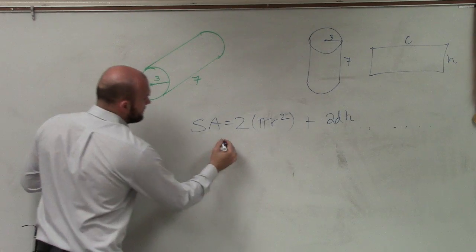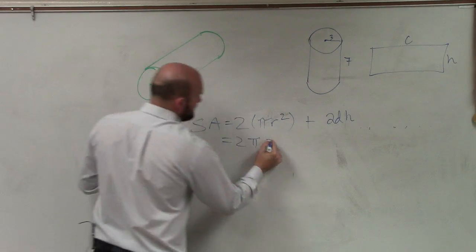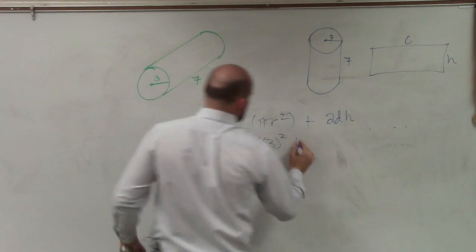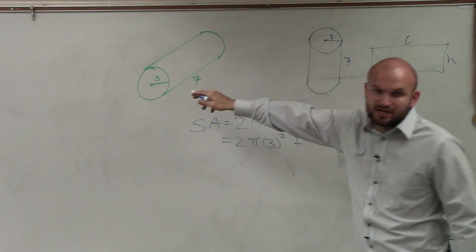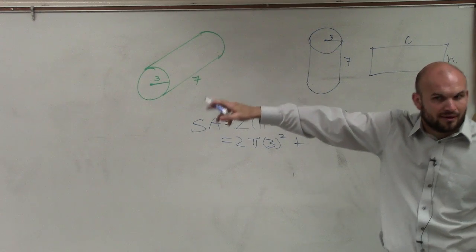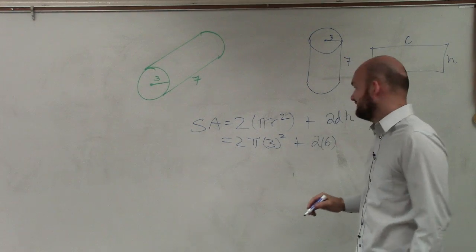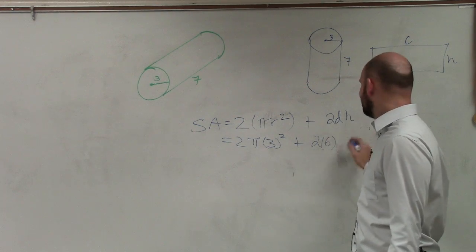Now, let's plug in what we know: 2 times pi. Do we know what r is? It's 3 squared. Plus, if r is 3, then the diameter is 6. Plus 2 times 6, and the height is 7.